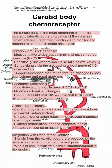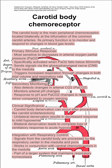The carotid body chemoreceptor is integrated with other elements of respiratory control. Signals from the carotid body are processed by the respiratory center in the medulla and the pons, and the carotid body works in conjunction with central chemoreceptors in the medulla. This makes it part of a larger system that maintains respiratory homeostasis.